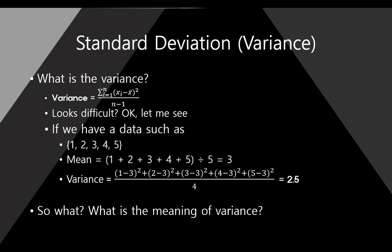Next is standard deviation, sometimes called variance. These two are different but have almost exactly the same meaning. What is the variance? Variance is calculated as the summation of each observation minus the average, and that value is squared. Here, x_i means each observation. From each observation we subtract the mean (x-bar), then square the value, sum all squared values, and finally divide by n minus 1. Here, n means number of observations.